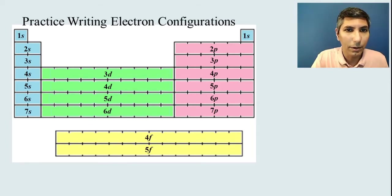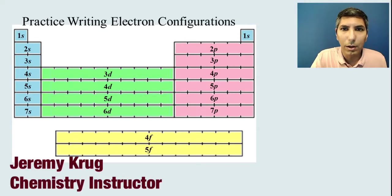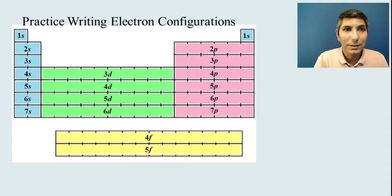In our second video of unit 1 lesson 5, we're going to focus on how electrons are configured in atoms. Now it's very important to be able to write electron configurations for pretty much any atom on the periodic table.